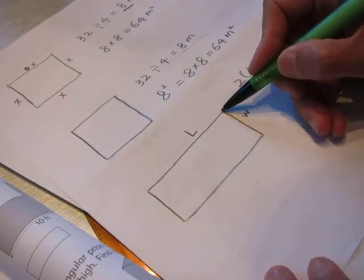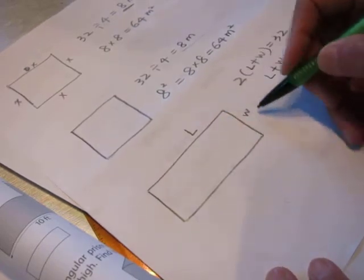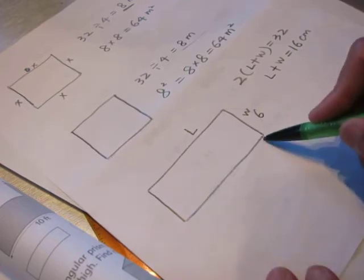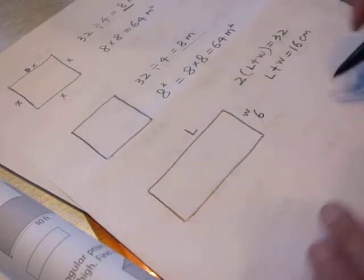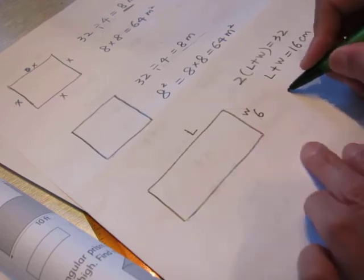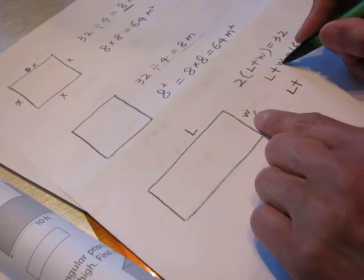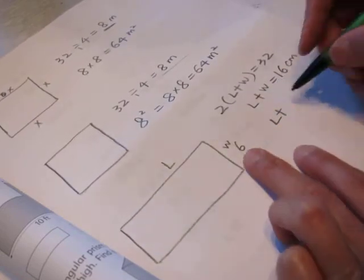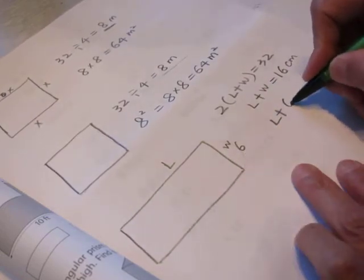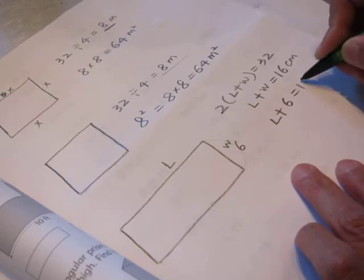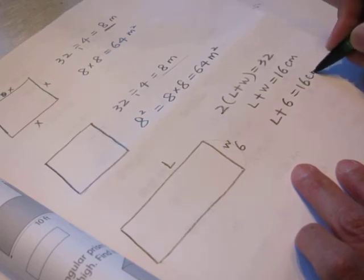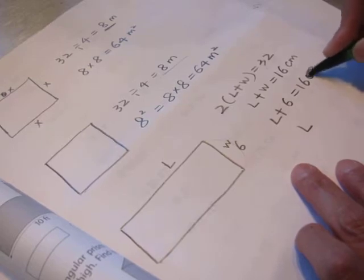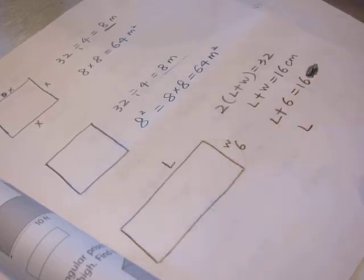And now we know the width is 6. So what is this length? Length, so length plus width, we substitute this width with the real number, 6, equal to 16 centimeter, right? So length, we do not need to write this cm now.